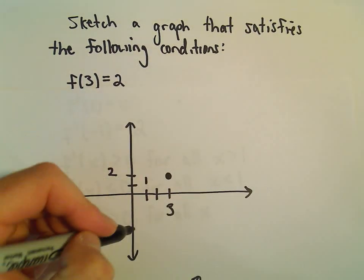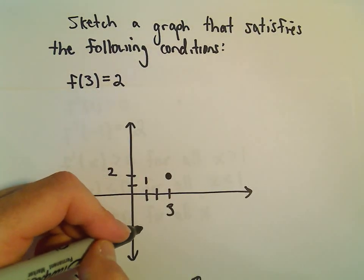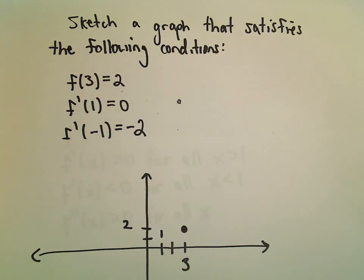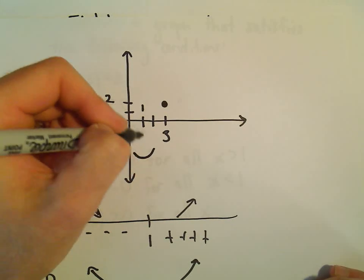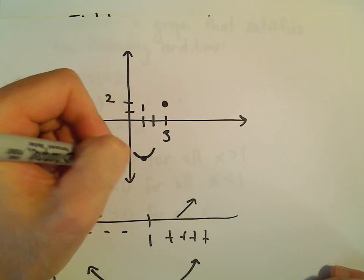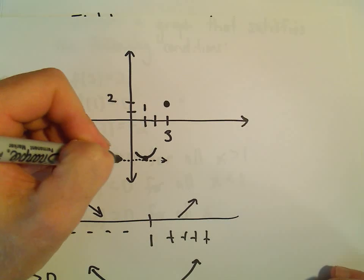At x equals 1, the slope of the tangent line is 0 since f prime of 1 equals 0. So at x equals 1, I'll make it bottom out here. There at the x-coordinate of 1, the slope of the tangent line equals 0.